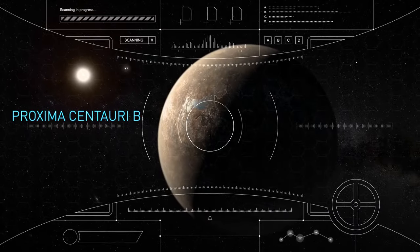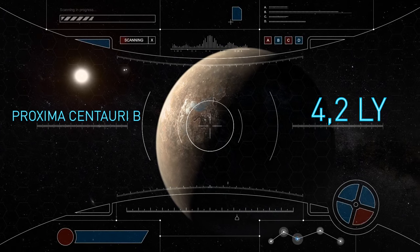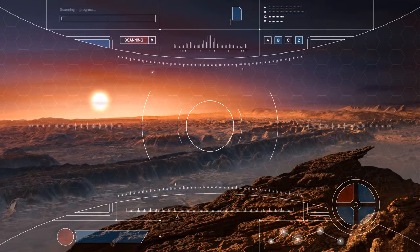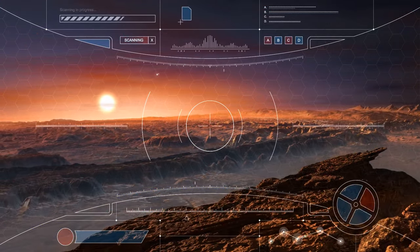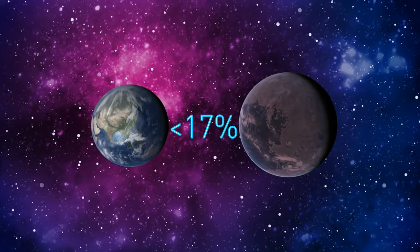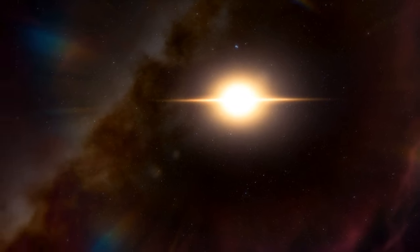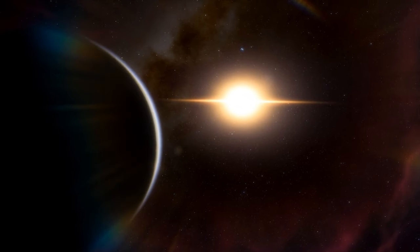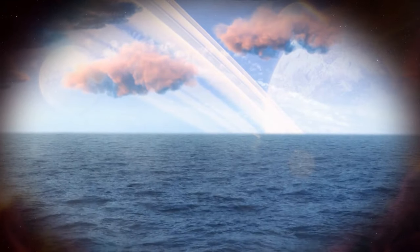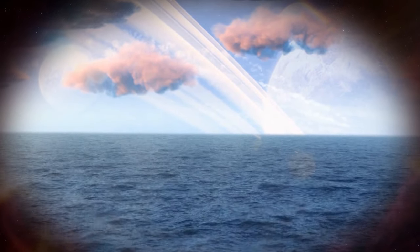It's a mere 4.2 light-years away from Earth. Recently, astronomers have found out that this world might resemble Earth even more than they previously thought. It's just 17% more massive than our home planet. It orbits a star that is dimmer and less massive than the Sun. Proxima Centauri b is in the middle of the star's habitable zone. This means that the chances of liquid water and life might exist on the planet.